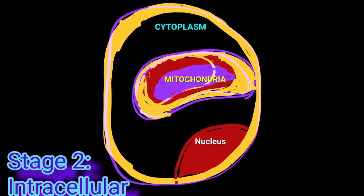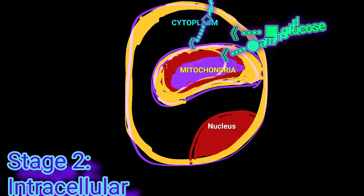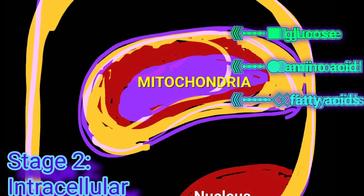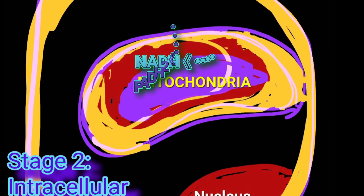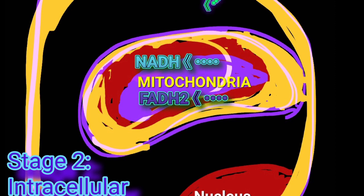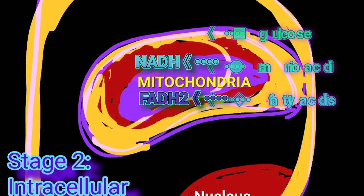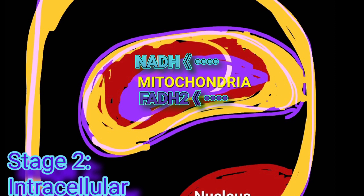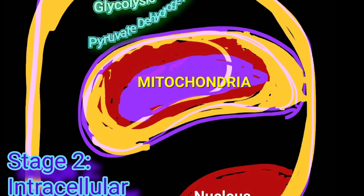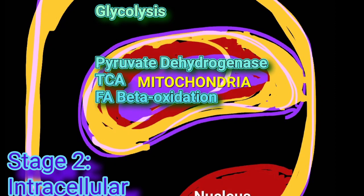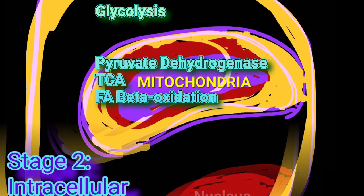After their pickup from circulation, glucose, amino acids, and fatty acids are catabolized inside the cell, either in the cytoplasm or the mitochondria, to produce high-energy molecules. Of the four major catabolic pathways, only glycolysis occurs in the cytoplasm, whereas pyruvate dehydrogenase, the TCA cycle, and fatty acid beta-oxidation occur inside the mitochondria.